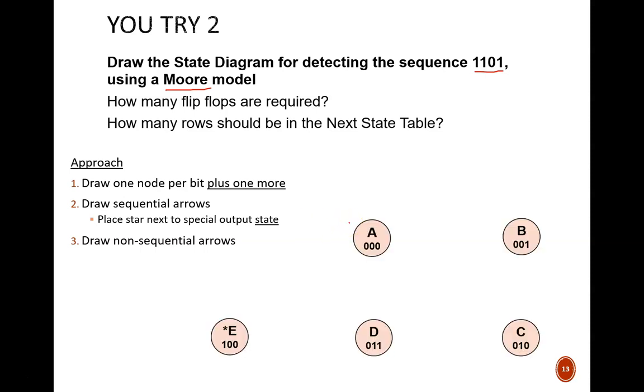Here's the start to my state diagram. There are 5 nodes to handle the 4-bit sequence. This has the effect of requiring 1 extra bit in the state codes. Note that the star is placed on node E. That is the state that indicates the sequence has been achieved. Next, we see the sequential arrows. 1, 1, 0, 1 moves in order through the states.